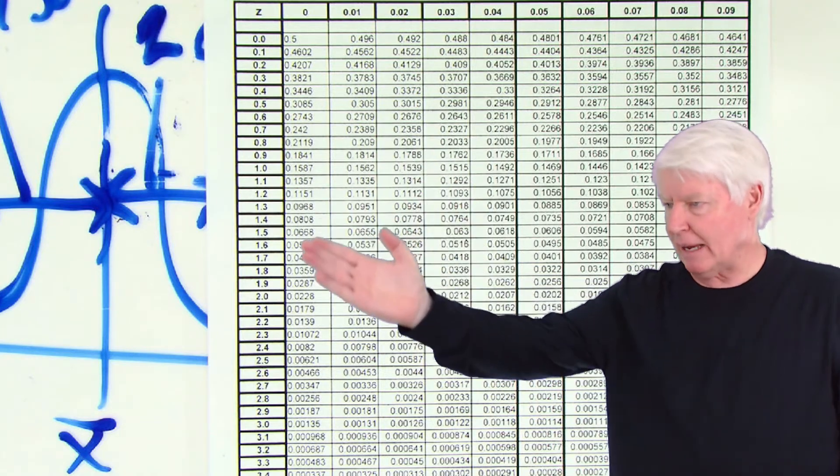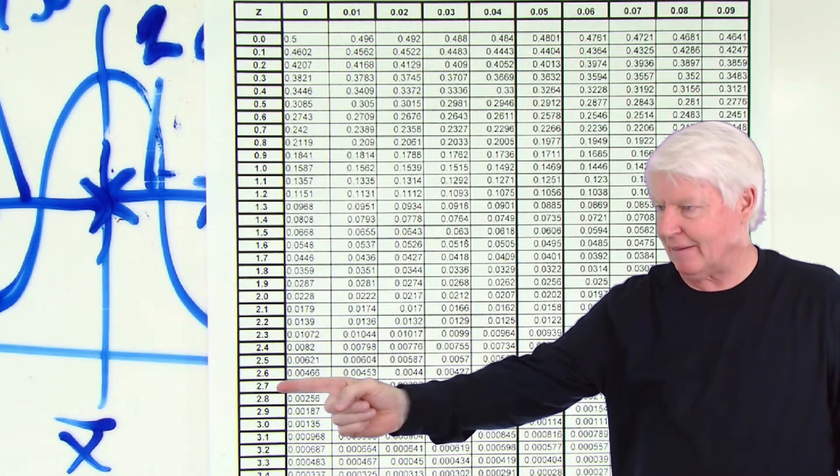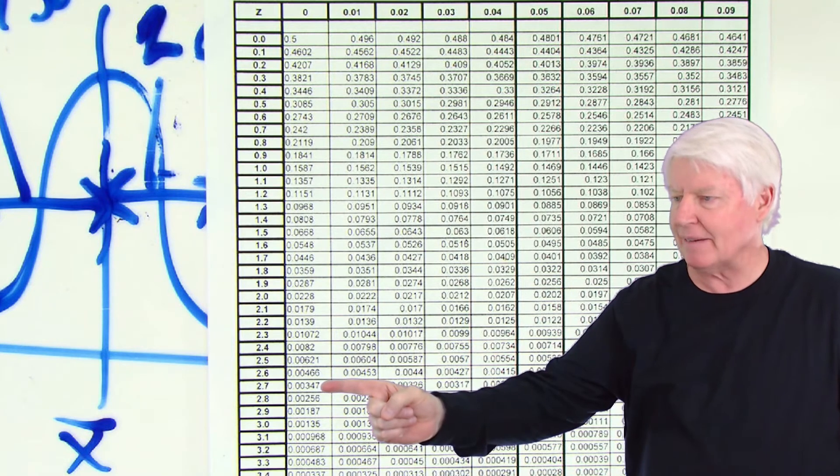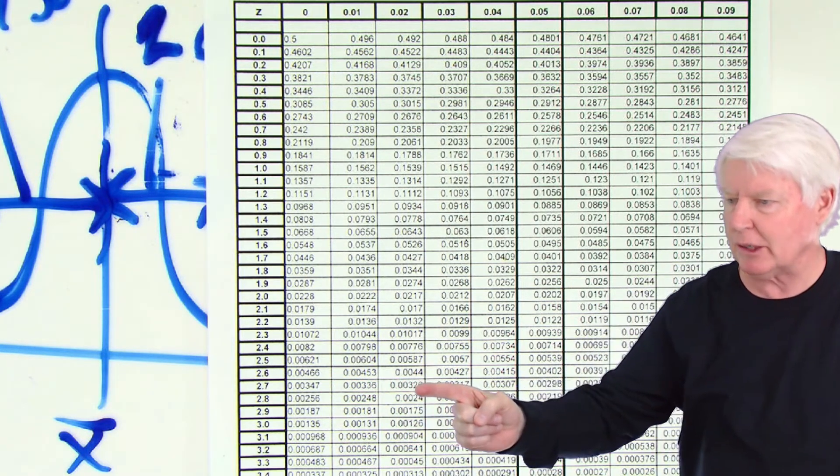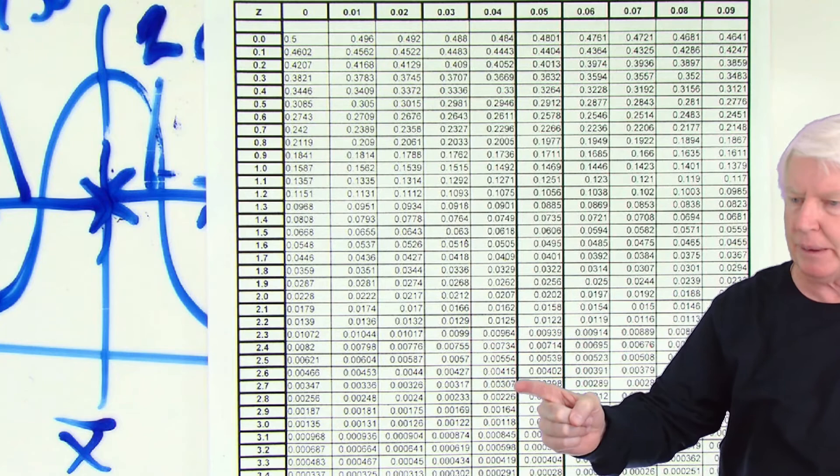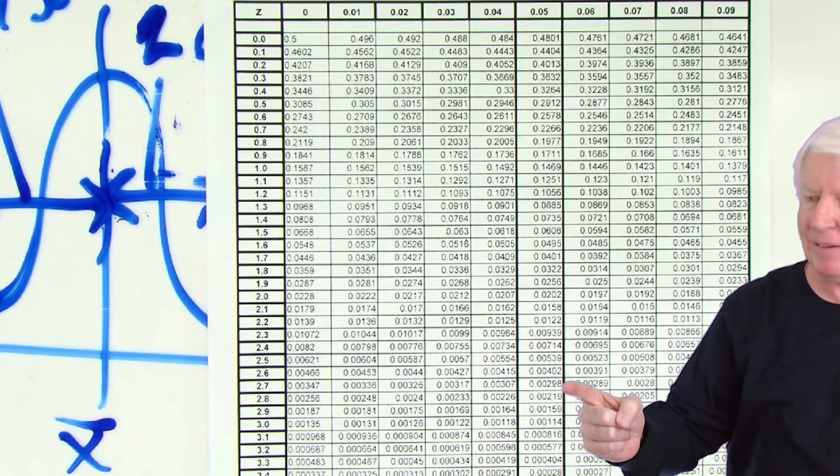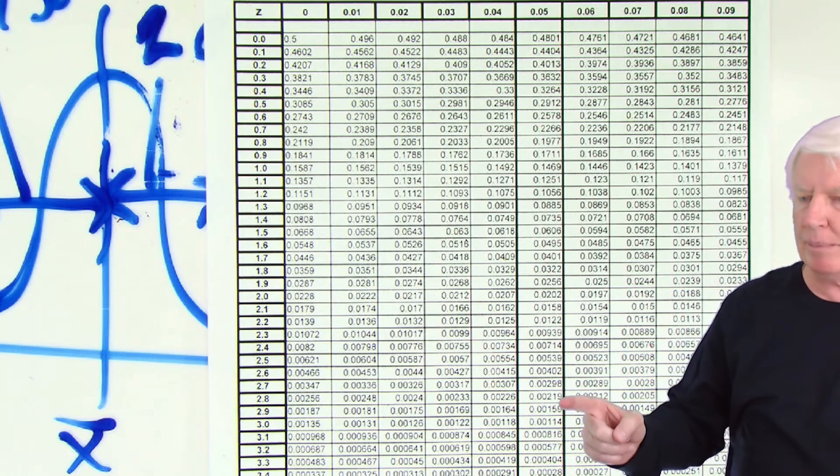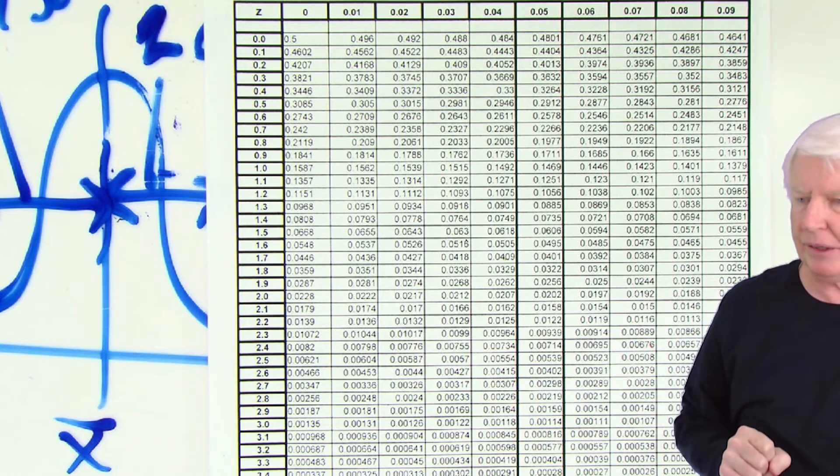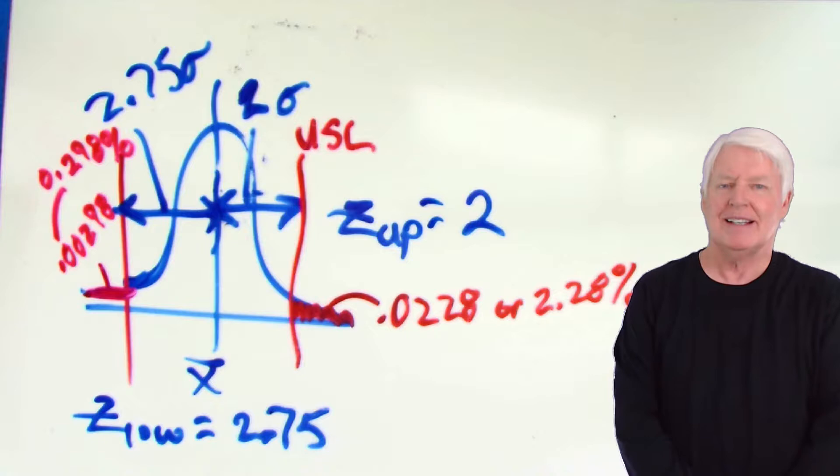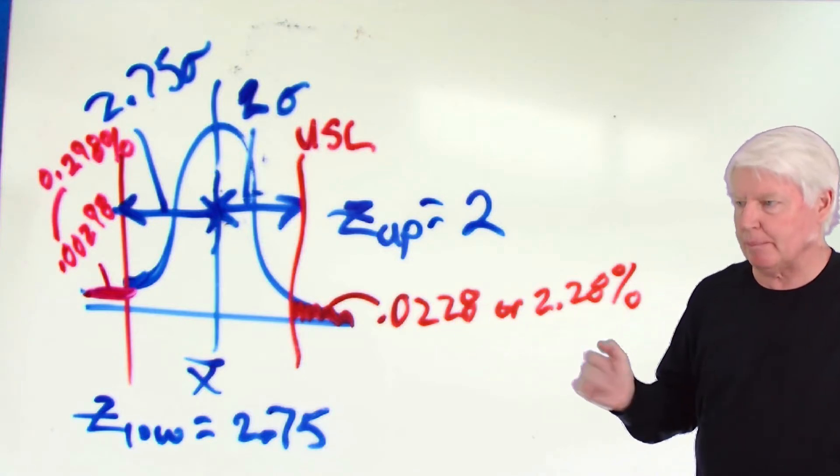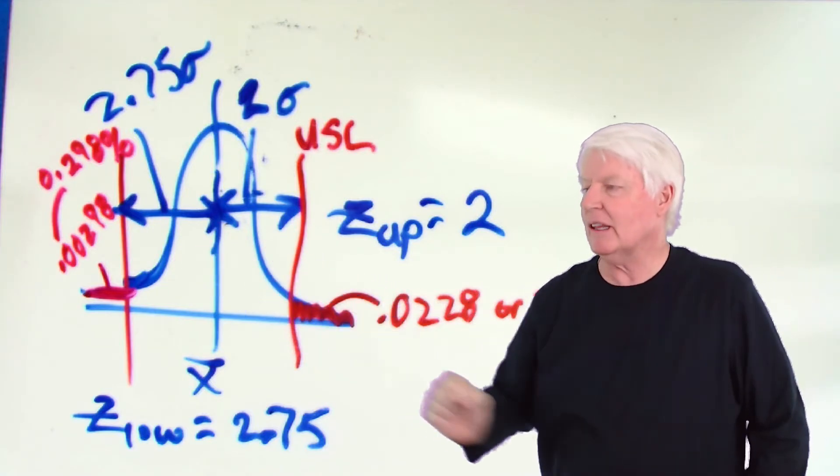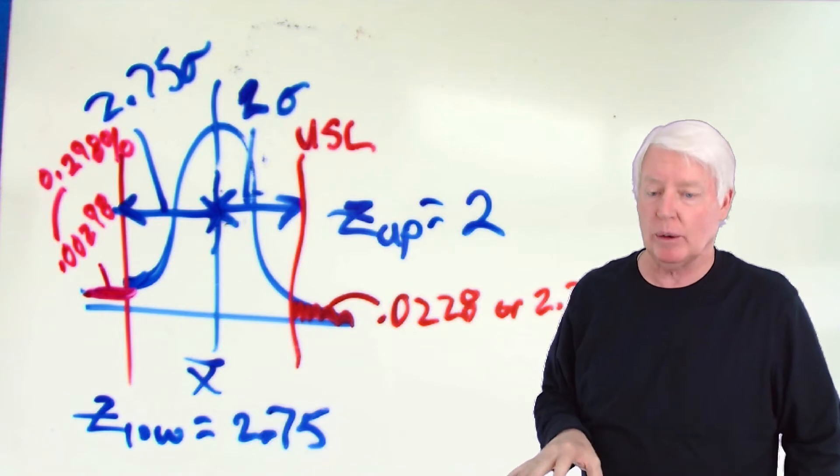Now let's look up the z lower, which is 2.75. So let's go back to the z table and look up 2.75. So here's the z table, I dropped down to 2.7, and then this next column would be 2.70, 2.71, 2.72, 2.73, 2.74, 2.75. So that was our z lower statistic, so it'll be .00298. So let's go back to the whiteboard and put that in our picture there, .00298.